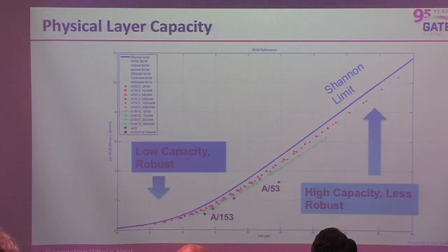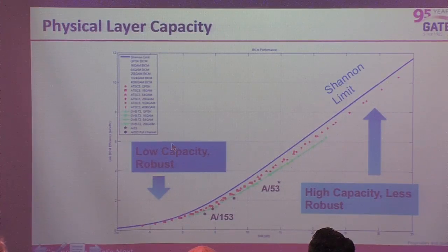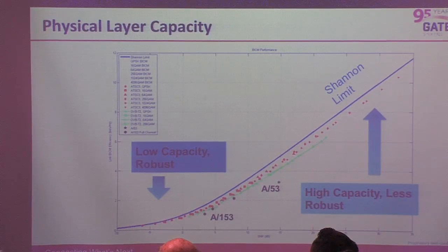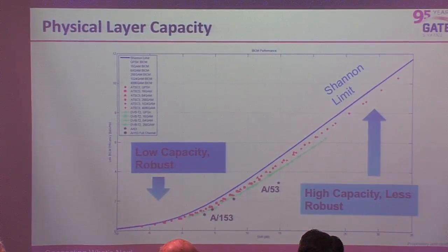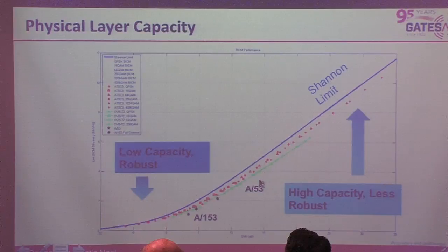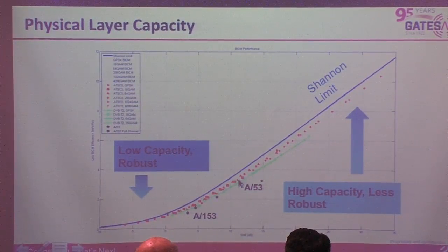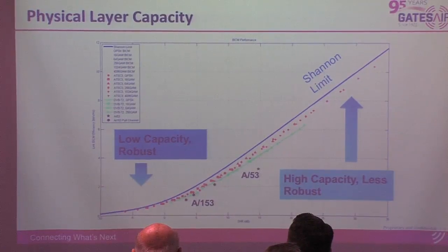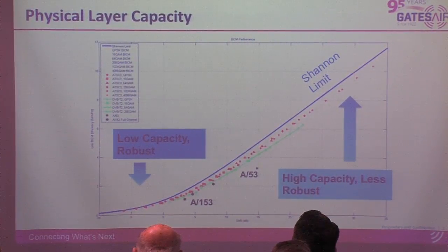No one's proved Claude Shannon wrong yet. On this version of the chart, there are comparisons between DVB-T2. Early on there was discussion about just taking the DVB-T2 physical layer and bolting it in — DVB representatives participated early and often, and that was one of their early proposals. But if you look at the T2 parts on this chart, they're below the ATSC-3 numbers. So there's a lot of work that went into getting that smidgen of decibels to improve the physical layer.